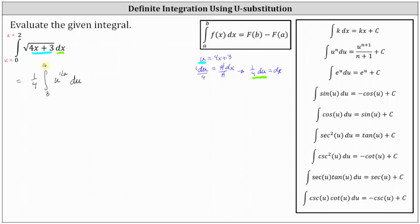And now that we have these new limits of integration, we can evaluate like we normally do. Determining the antiderivative, we have one-fourth times u to the power of one-half plus one, which is three-halves, divided by three-halves. Dividing by three-halves is equivalent to multiplying by the reciprocal of two-thirds, which gives us one-fourth times two-thirds times u to the power of three-halves.